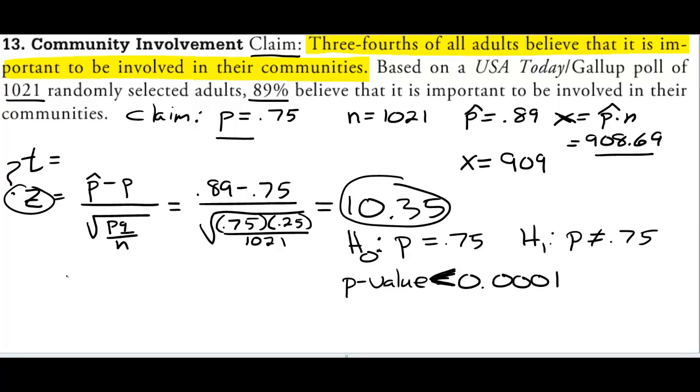And then the only other thing they could ask us is what's our conclusion? So if the p is low, the null must go. So reject the null.